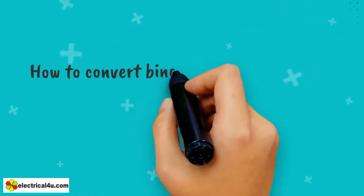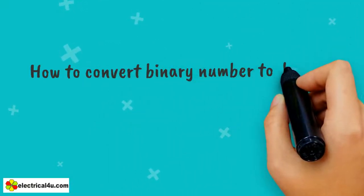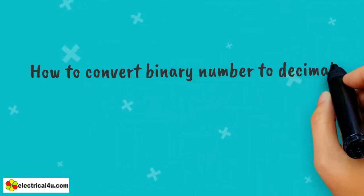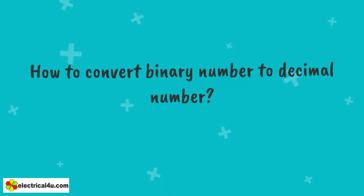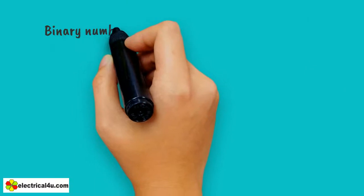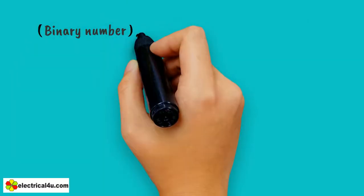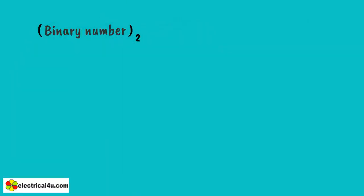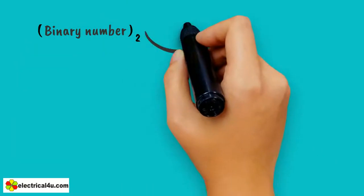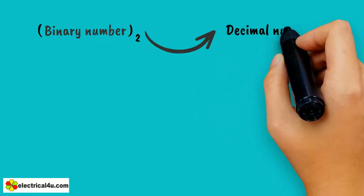We are going to discuss how to convert binary number to decimal number — that is, conversion of binary with a base 2 to decimal number with a base 10.